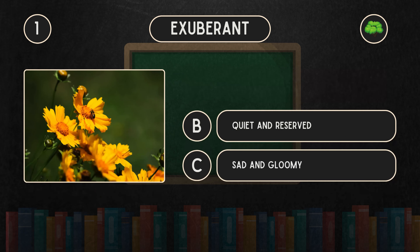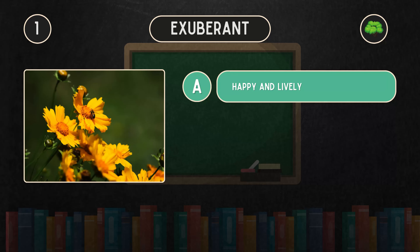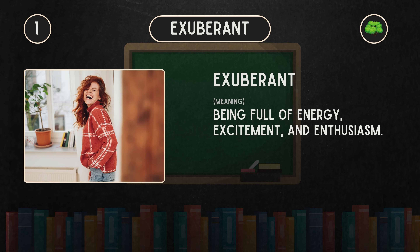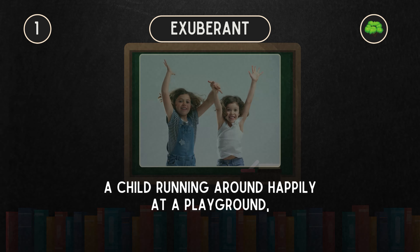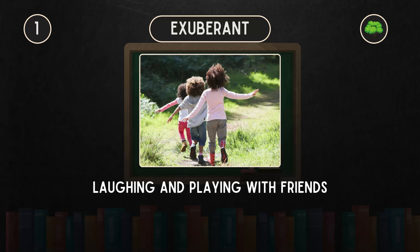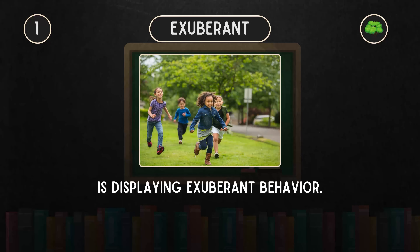A. Happy and lively. Exuberant means being full of energy, excitement, and enthusiasm. For example, a child running around happily at a playground, laughing and playing with friends, is displaying exuberant behavior.